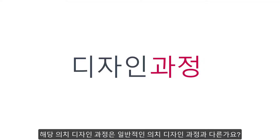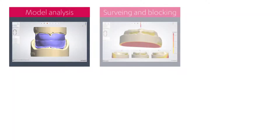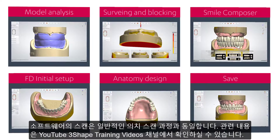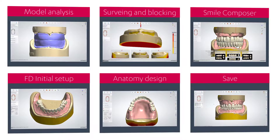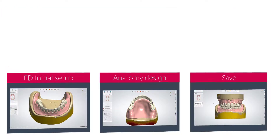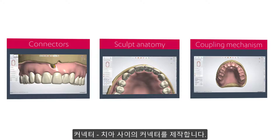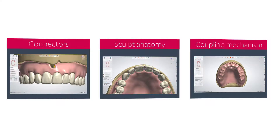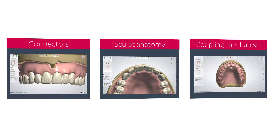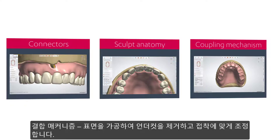Does the design process for this type of denture differ from the standard denture? The scanning in the software is the same as for the standard denture shown in our previous videos. However, during design, you'll have three additional steps: Connectors, to create connectors between teeth; Sculpt Anatomy, which will allow you to adjust the shape of the teeth; and Coupling Mechanism, which will create an artificial surface to remove undercuts and adapt it for gluing.